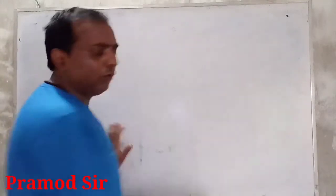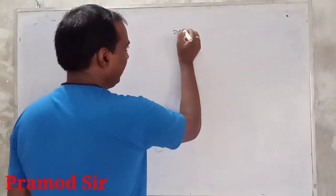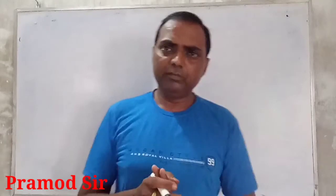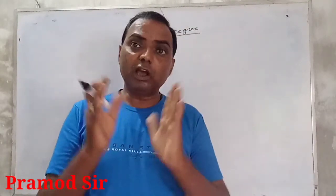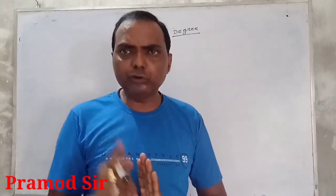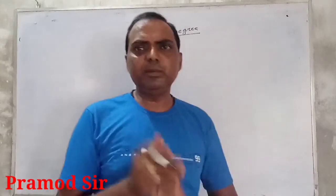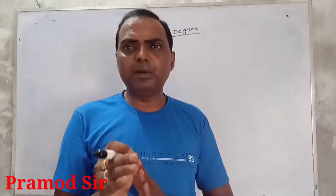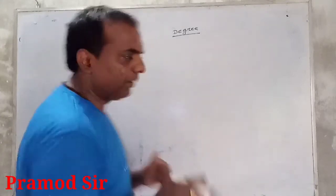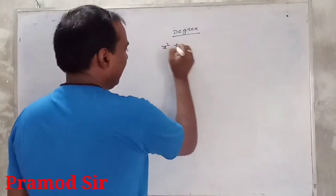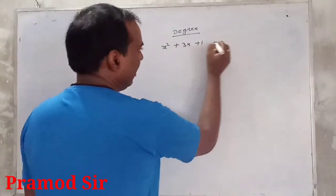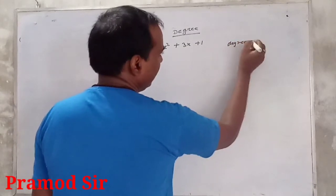Here we should know about degree. Kisi bhi polynomial mein, agar one variable hai, to uska maximum power — the maximum power — wah us polynomial ka degree kahlayega. For example, x² + 3x + 1 — here one variable, max power 2, so degree is 2.